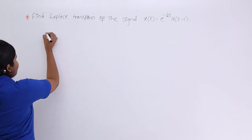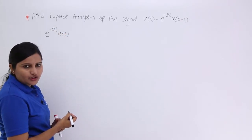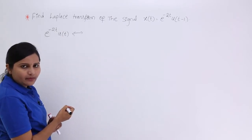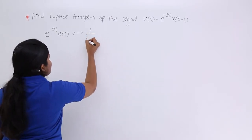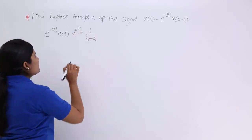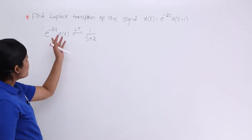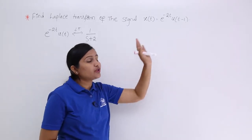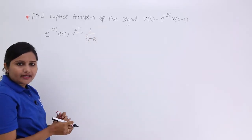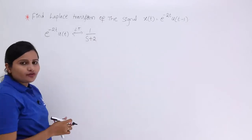Generally, if they give e^(-2t)·u(t), the Laplace transform is 1/(s+2) — whenever you see a minus in the exponential, you write plus in the denominator. But they are not asking the transform of e^(-2t)·u(t); they are asking for e^(-2t)·u(t-1). In exams they will likely give wrong options like 1/(s+2) evaluated at t=1, or (s+2)/(s-1), to mislead you.